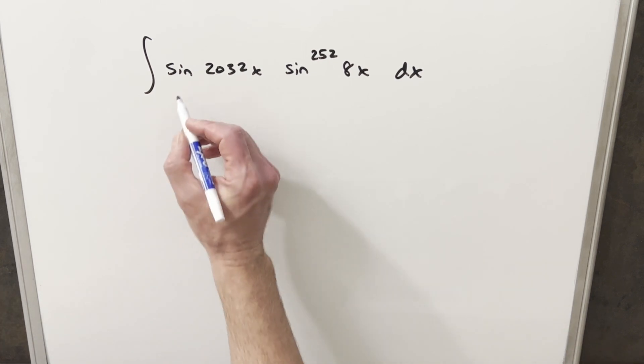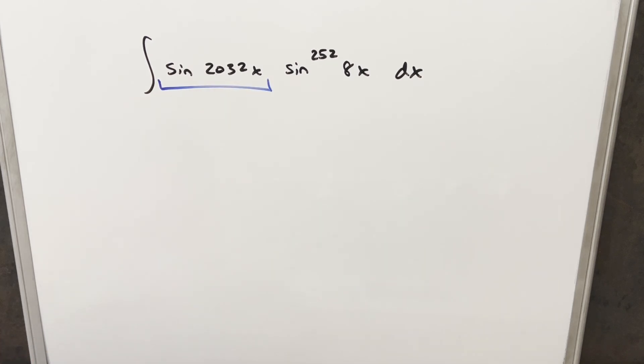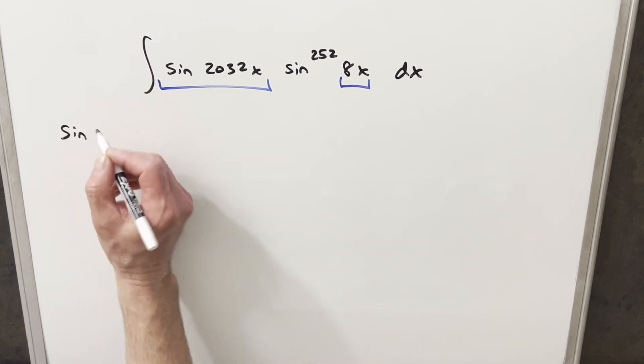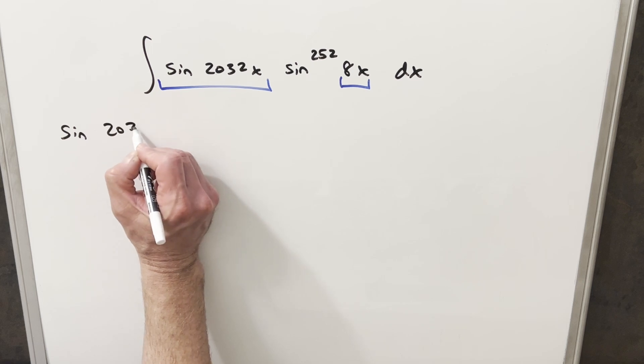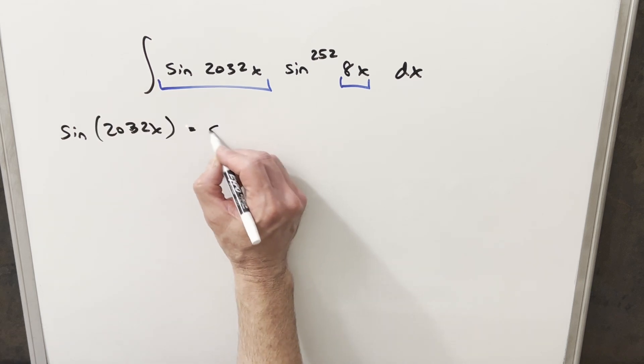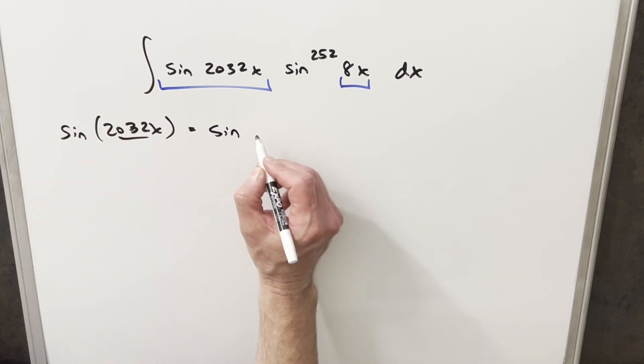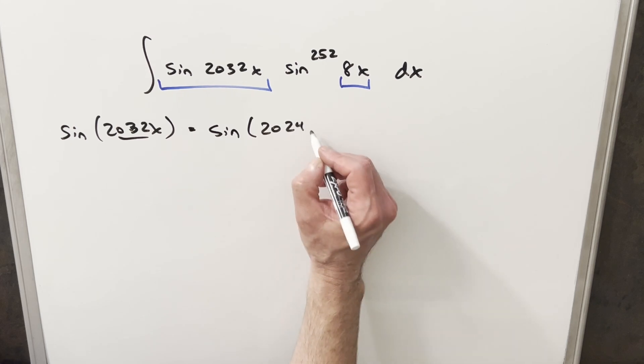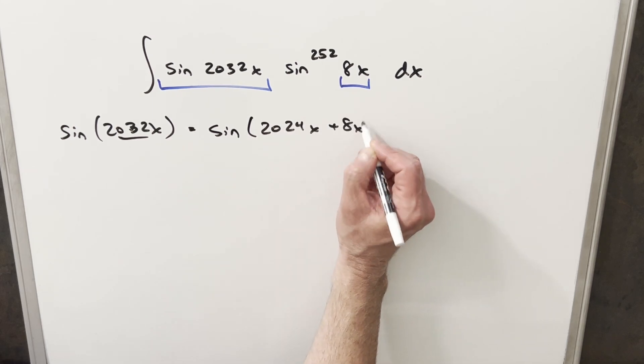So to get started with this, what I want to do is look at sin(2032x), and I want to break that up in order to get something to work with an angle of 8x. So that's not going to be too difficult because what I can do is just rewrite sin(2032x). I can break the angle up into two pieces, and I can write this as sin(2024x + 8x).